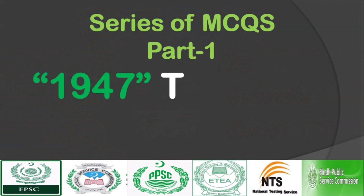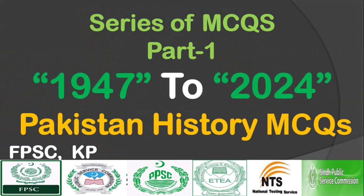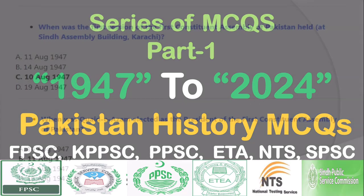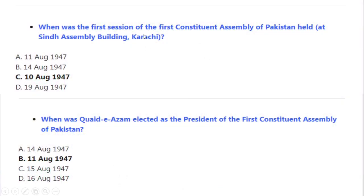Series of MCQs Part 1: Pakistan History MCQs 1947 to 2024. When was the first session of the first Constituent Assembly of Pakistan held? Correct option A: 10 August 1947, at the Sind Assembly Building, Karachi. When was Quaid-e-Azam elected as the President of the first Constituent Assembly of Pakistan? Correct option A: 11 August 1947.